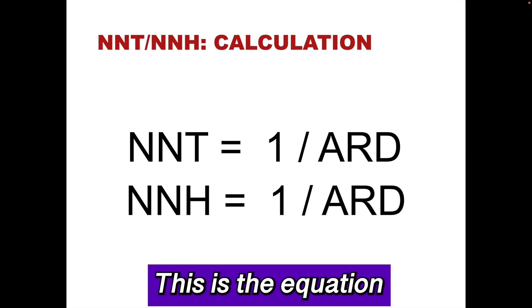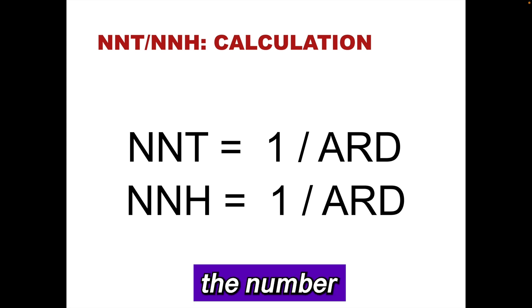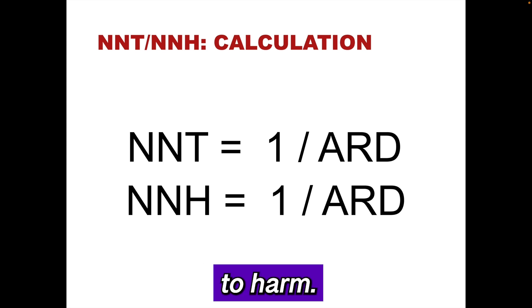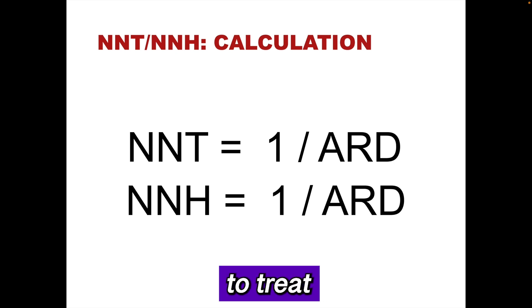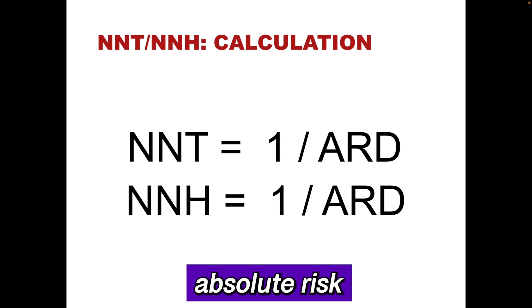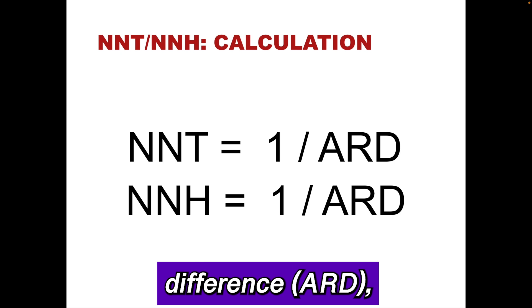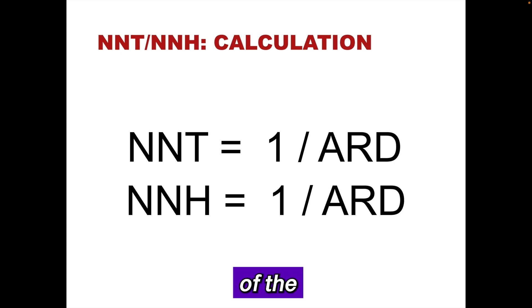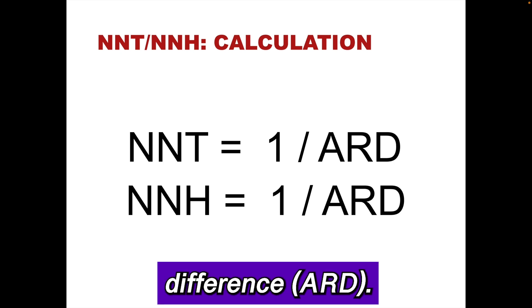This is the equation to calculate the number needed to treat and number needed to harm. The number needed to treat and number needed to harm are one divided by the absolute risk difference, or alternatively, the inverse of the absolute risk difference.